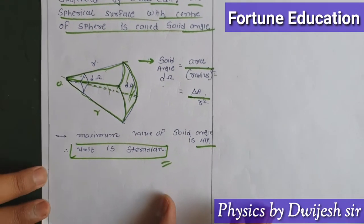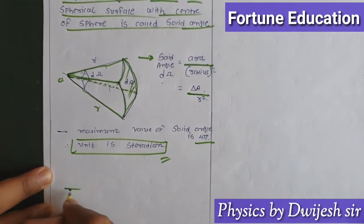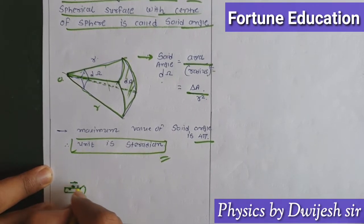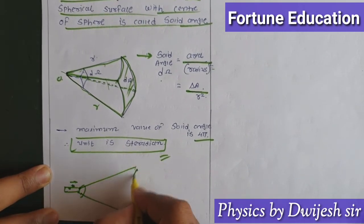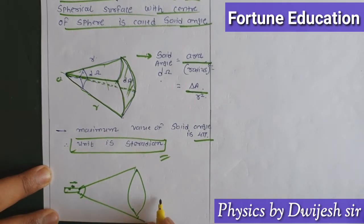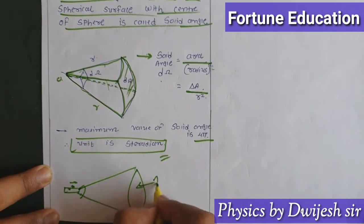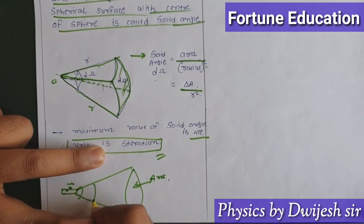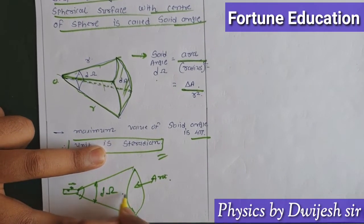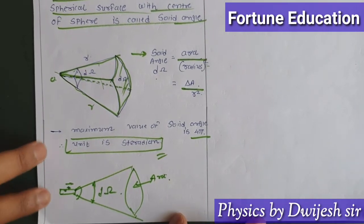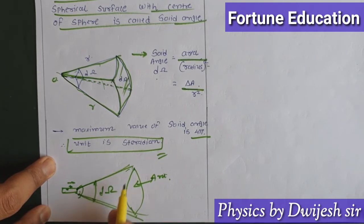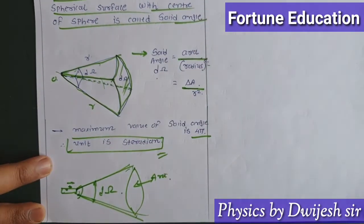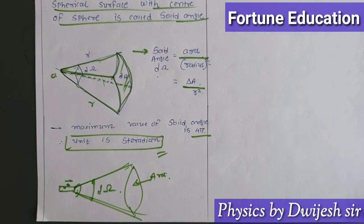An example of solid angle: consider a torch. When you turn on the torch, the light spreads outward forming a cone. The circumference area illuminated by the light and the angle it subtends with respect to the radius squared gives the solid angle dΩ. So the solid angle is area upon radius squared.